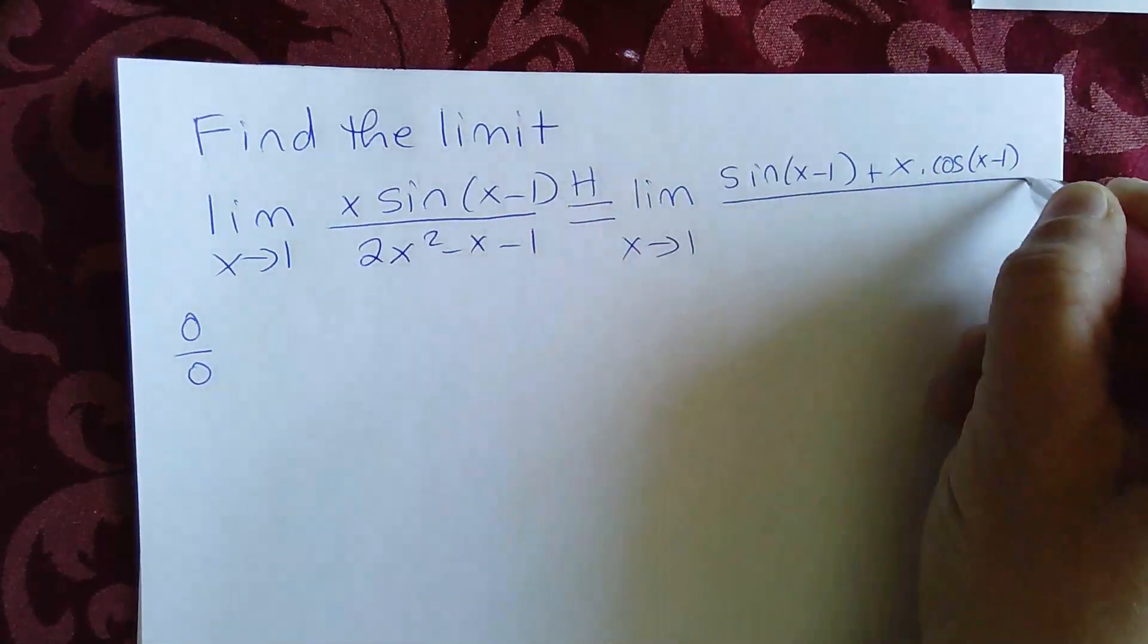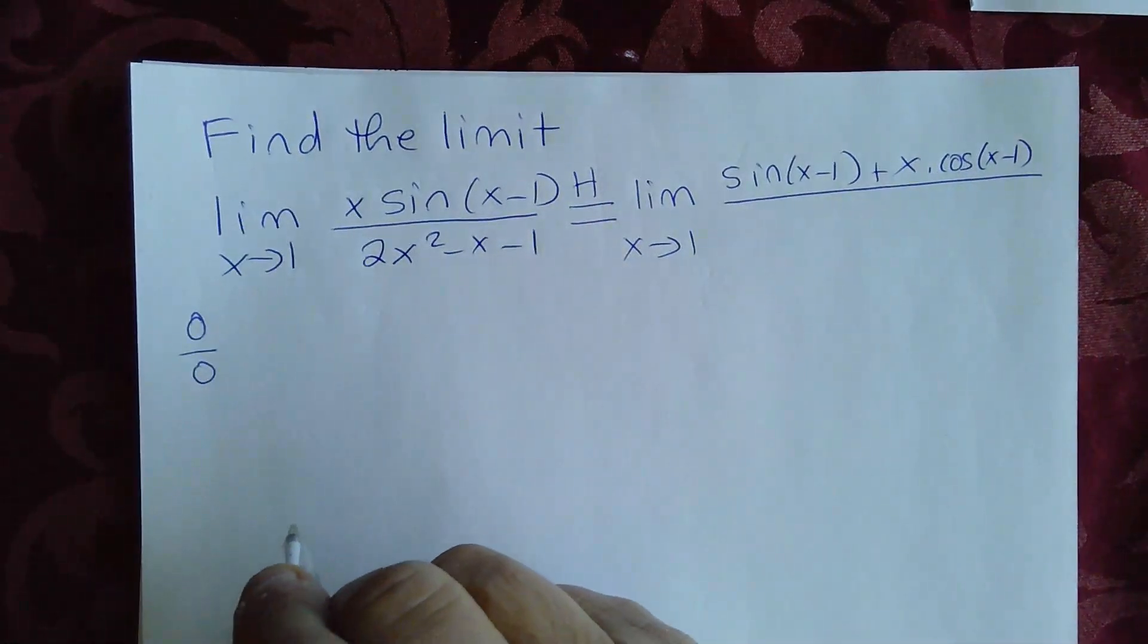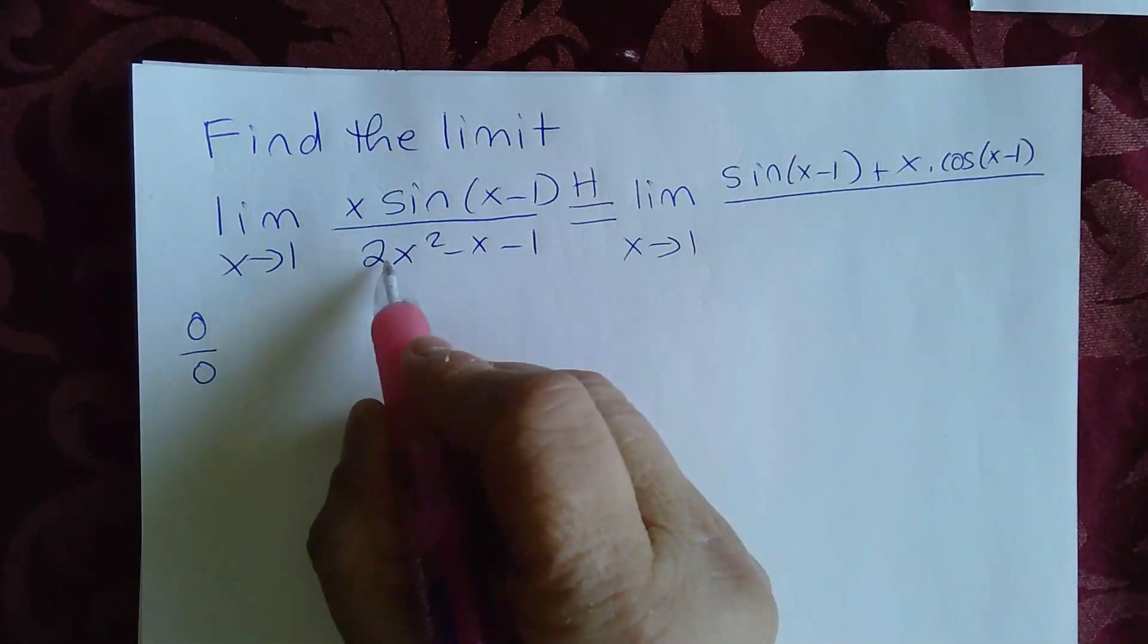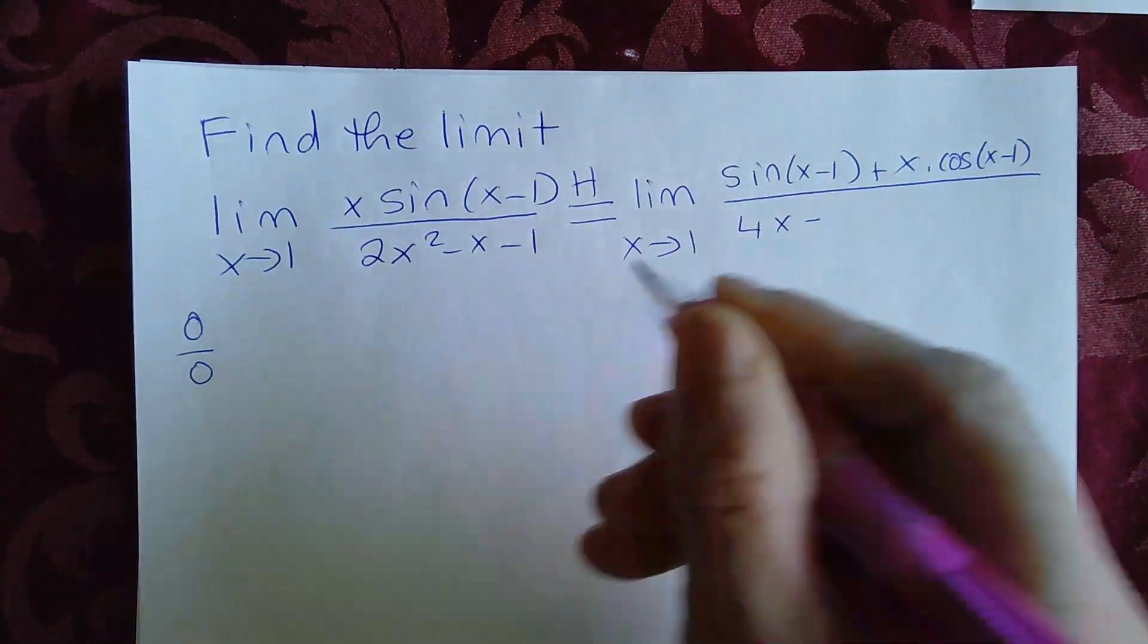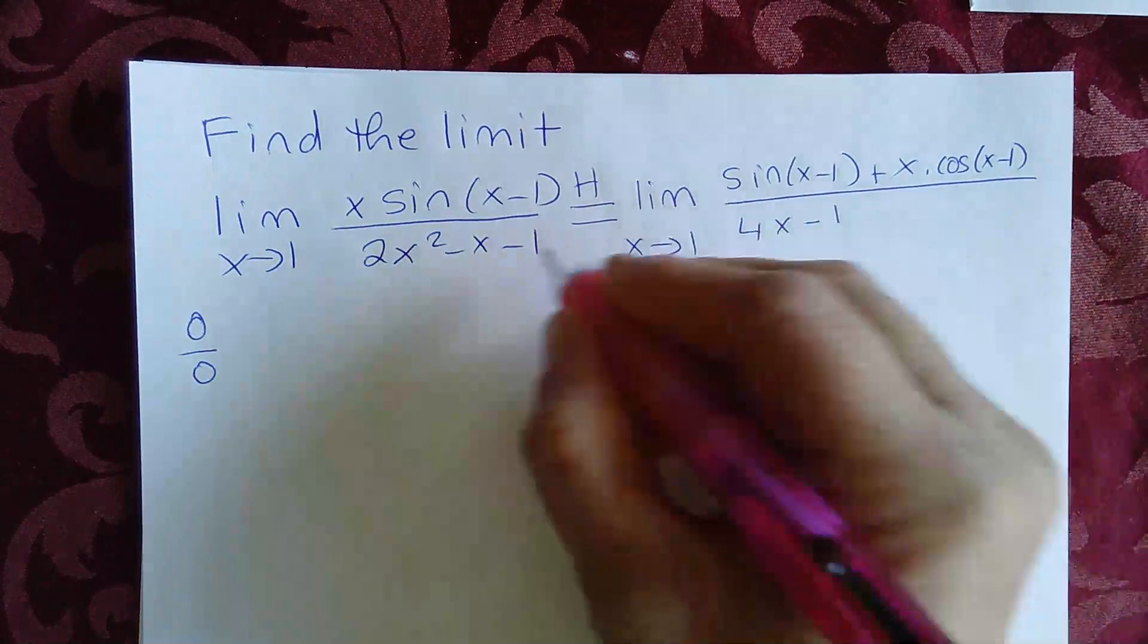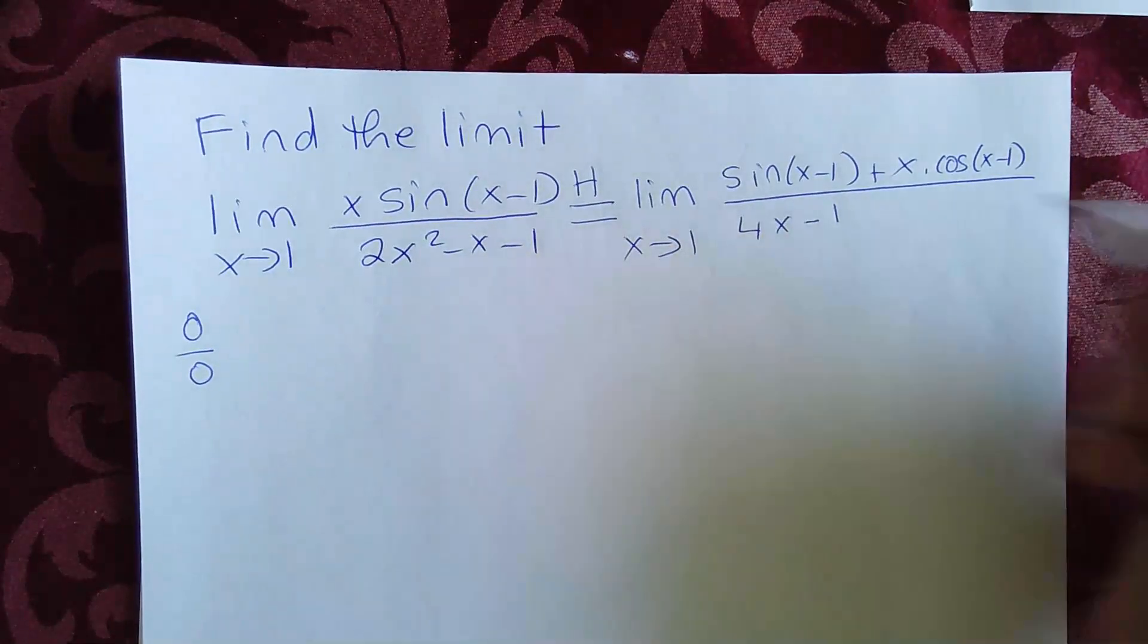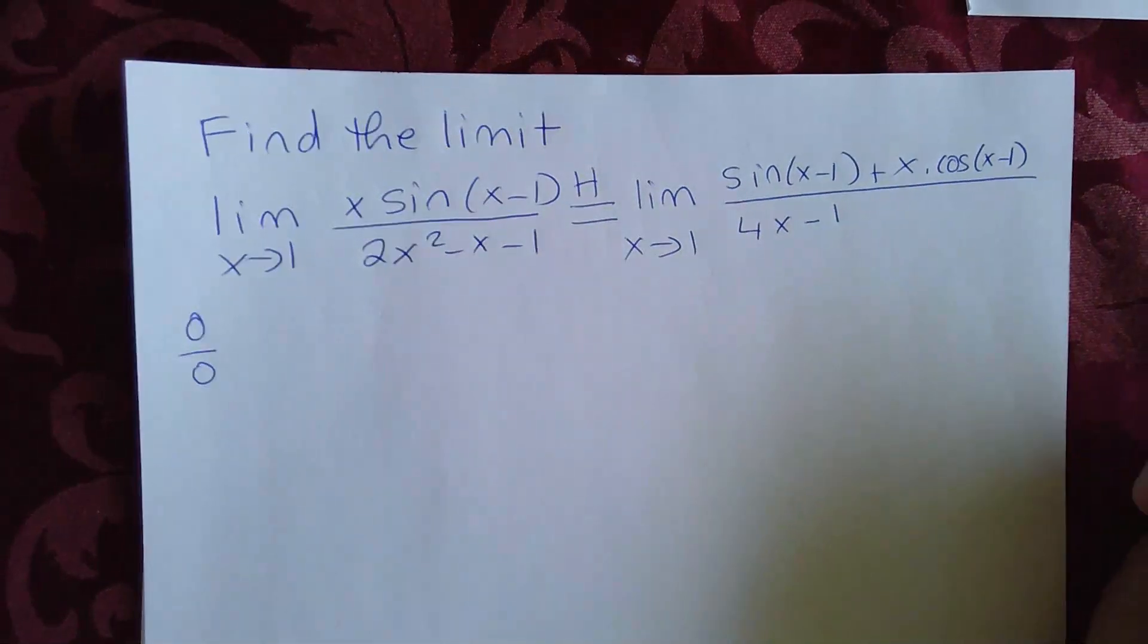Divided by the derivative of the denominator. So the derivative of 2x squared is 4x minus the derivative of x is 1. And this is 0. If you want to put 0 here, you can do that.